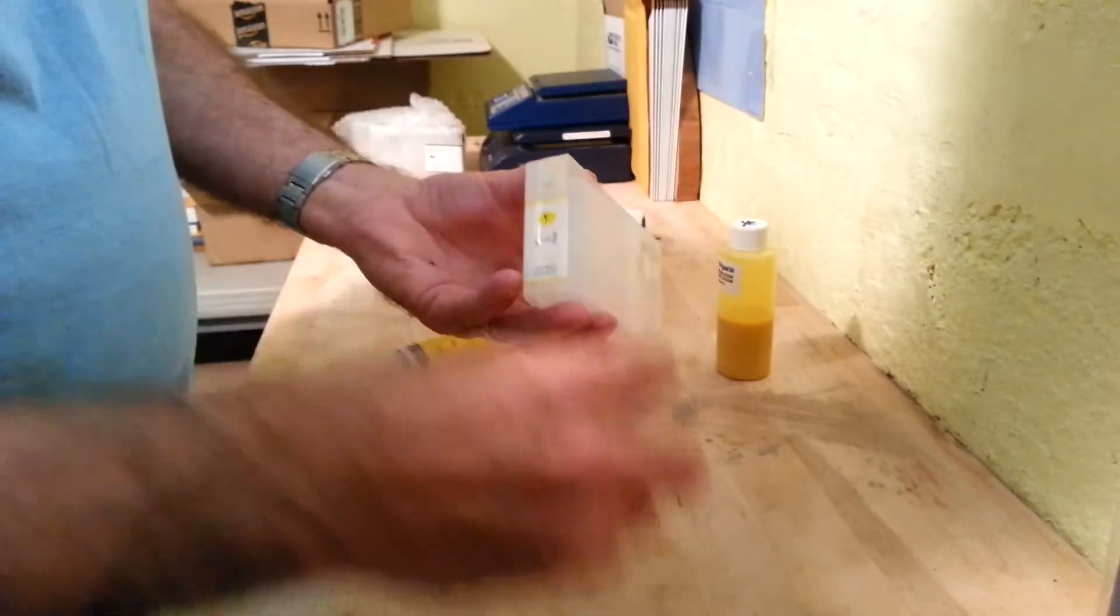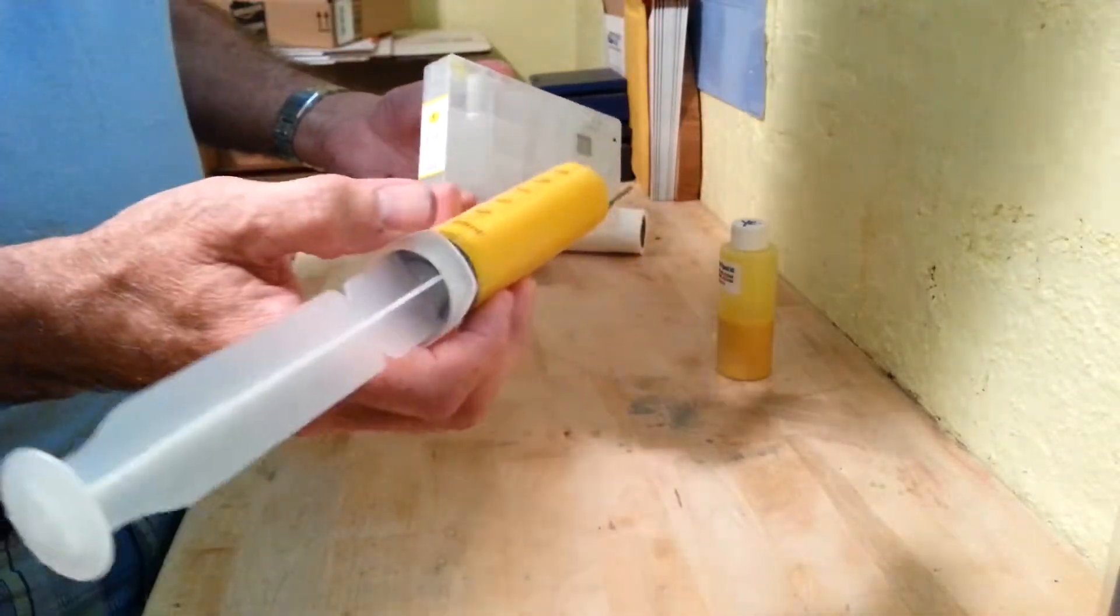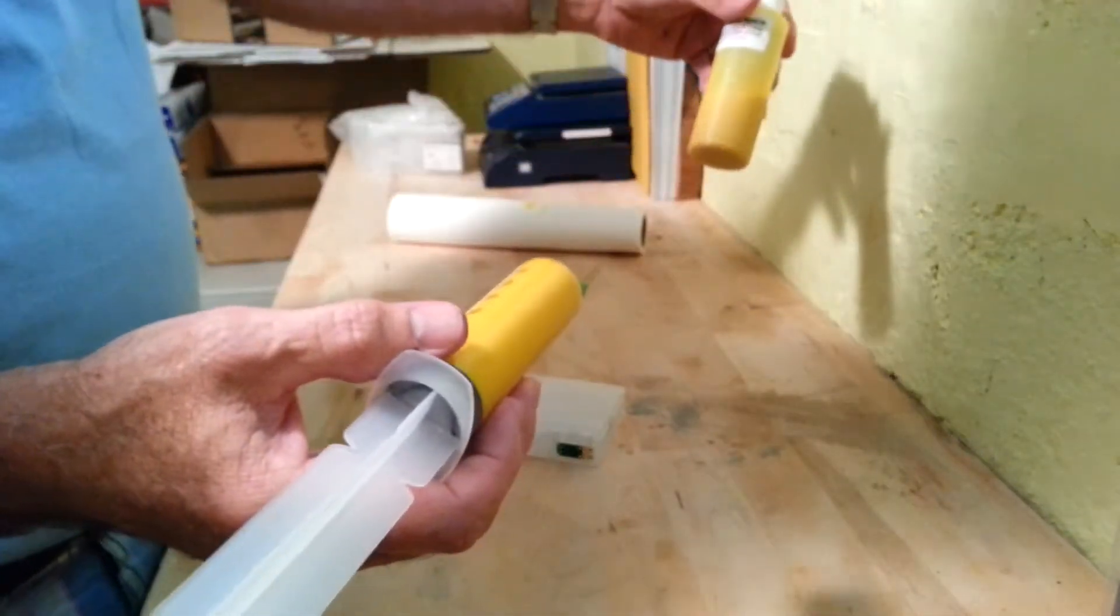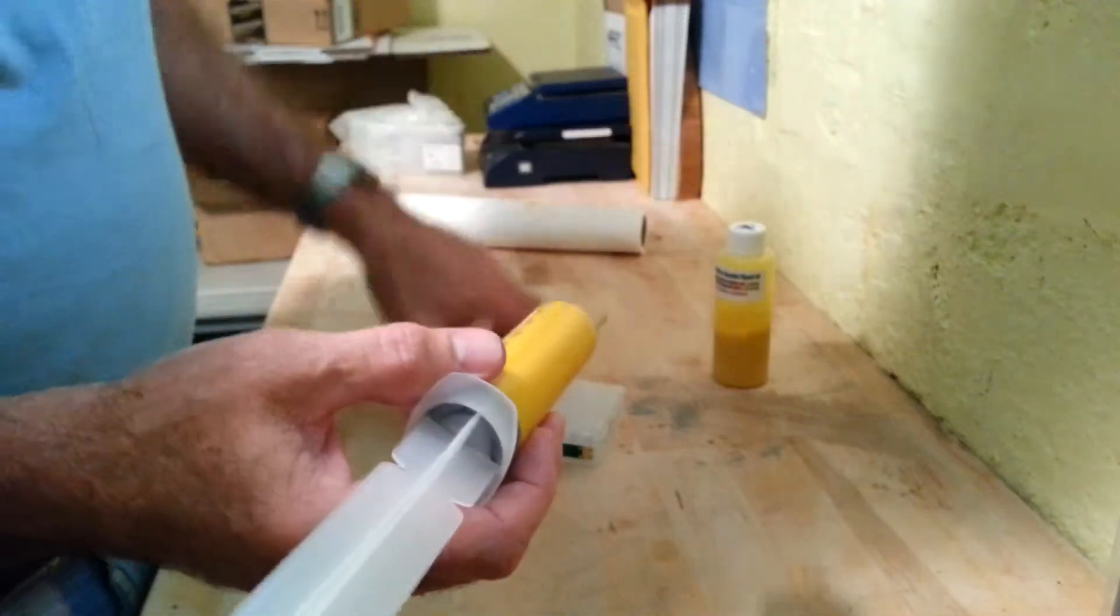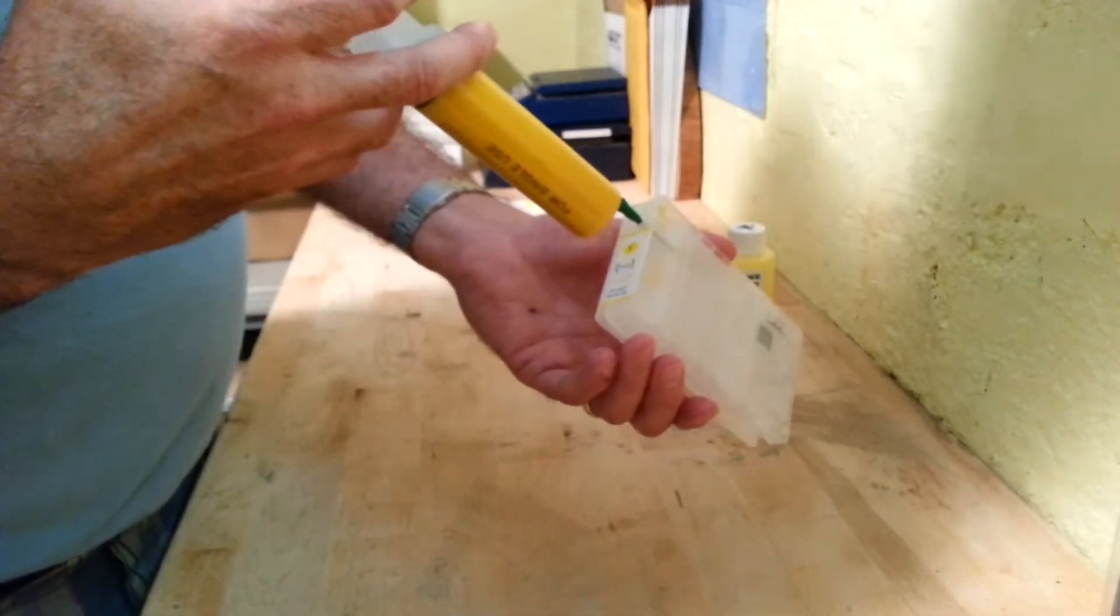The first thing we're going to do is pull the fill plug out. I have a syringe already filled with approximately 70 milliliters. You can see this is the ink where I pulled it out of the bottle here. And we're going to inject the ink into the back of the cartridge right here.